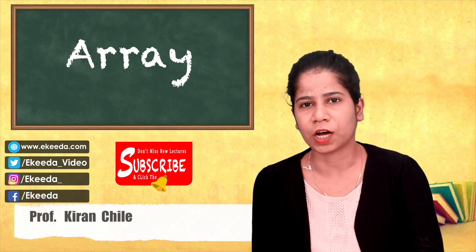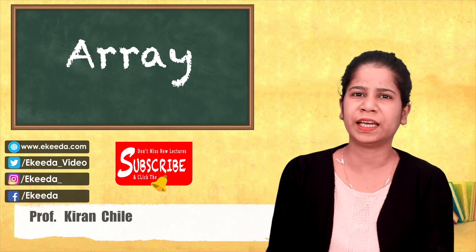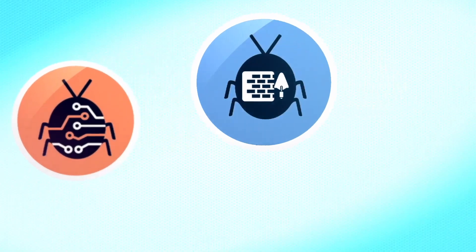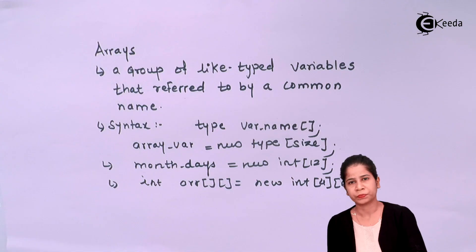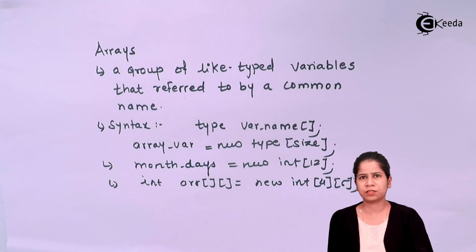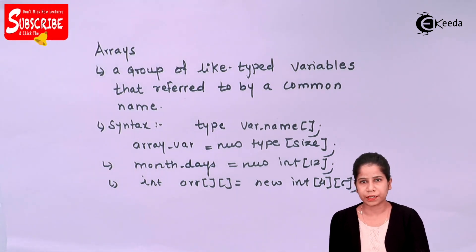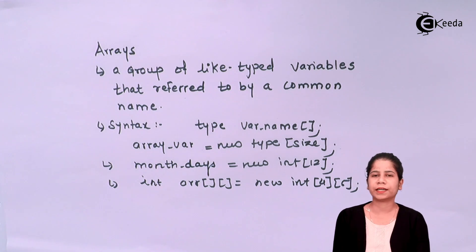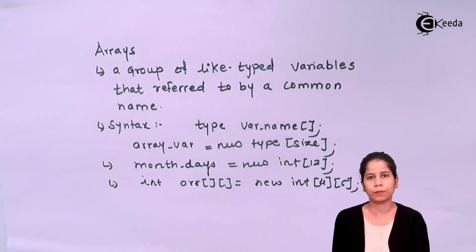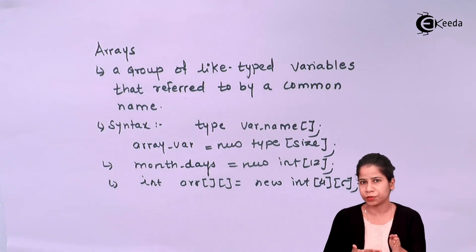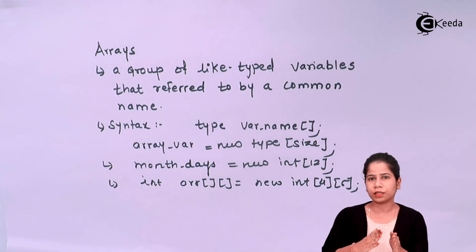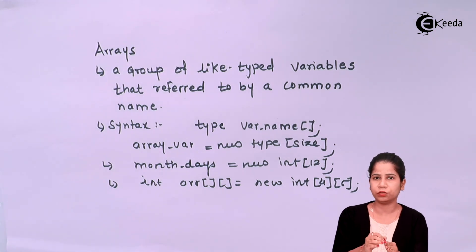It is a very important concept of Java and it is very much useful in any project which we do. So basically in the last videos we have seen something called as primitive data types. We have 8 primitive data types. Now what data types normally do — using data types I can store values into a program. That means whenever I say integer a equals 10, int is a primitive data type, so a 32-bit location is created in memory and it is holding the value 10.